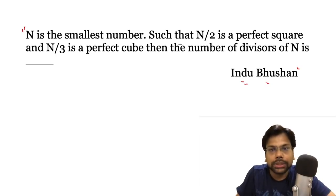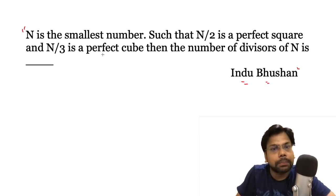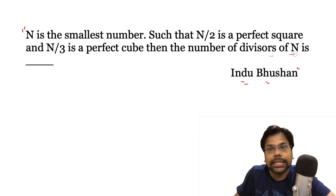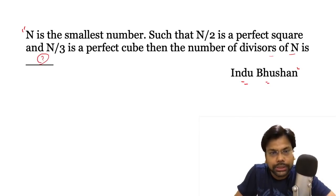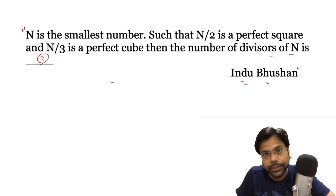N is the smallest number such that n divided by 2 is a perfect square, n divided by 3 is a perfect cube. Then the number of divisors of n is how many? I would suggest please pause the video and try to solve the question.